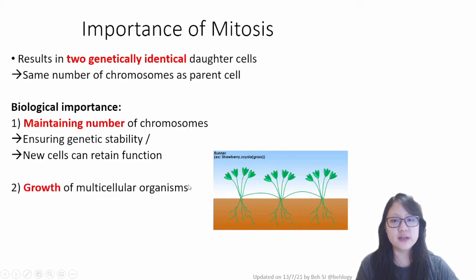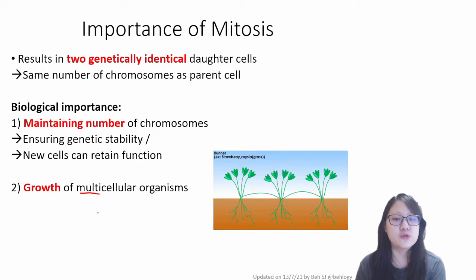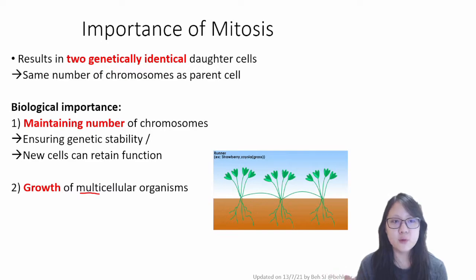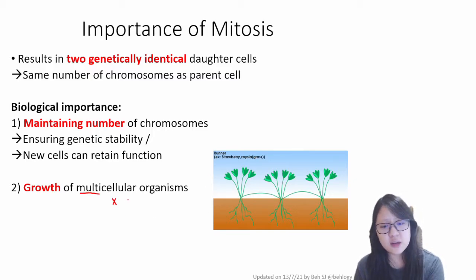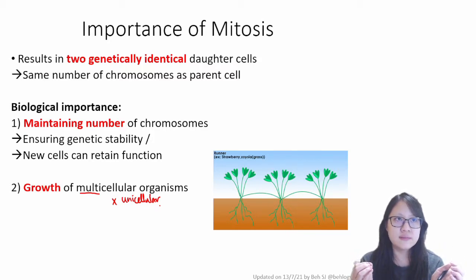These points highlight the importance of mitosis especially in multicellular organisms. The first point is growth of multicellular organisms. For example, we came from one cell and grew into a fully formed human being by mitosis — one cell became two, two became four, and so on. However, this cannot be applied to unicellular organisms because unicellular organisms do not grow by mitosis. A unicellular organism can divide, but then one organism will become two organisms — that individual itself doesn't grow because of mitosis.